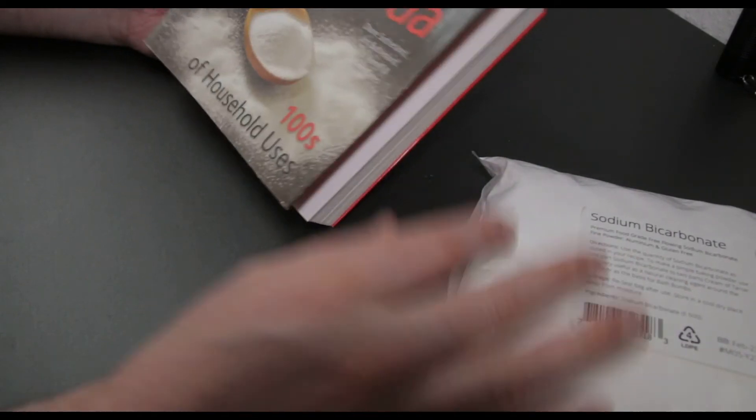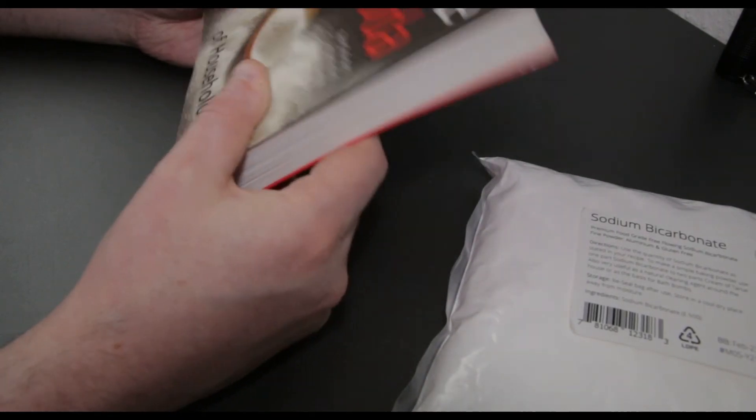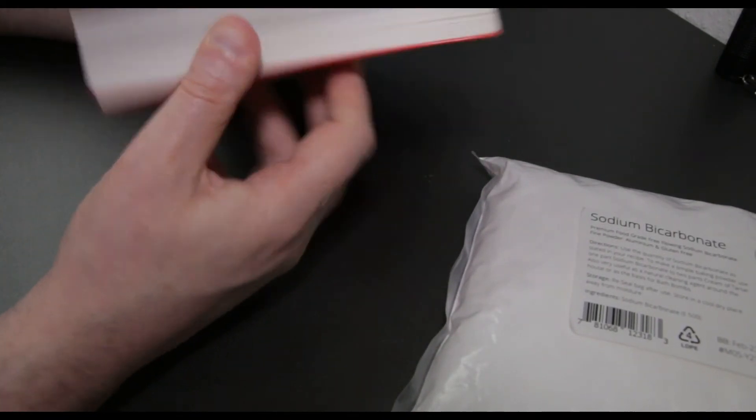I mean these pages are just crammed with just uses for one thing. Bicarbonate soda. I mean I already knew that it had multiple uses before I bought the book. But when I got the book and I seen how thick it was. I was like whoa.